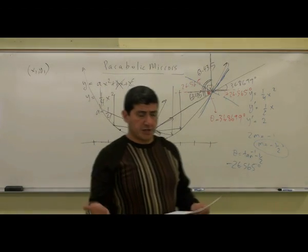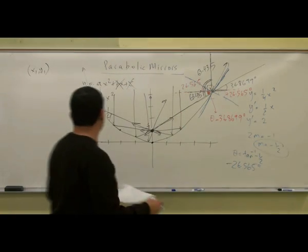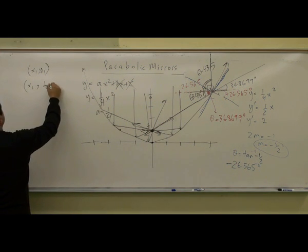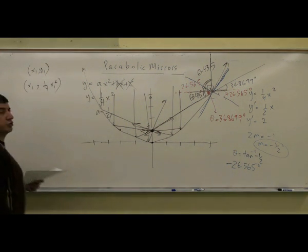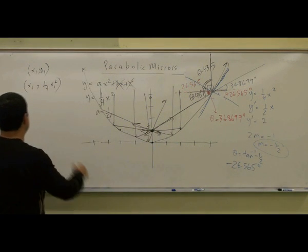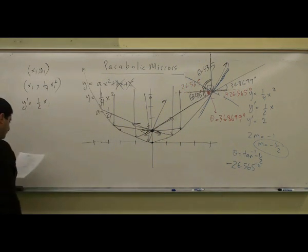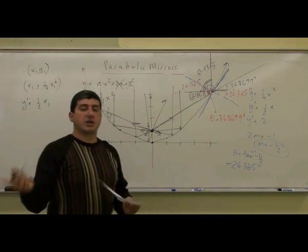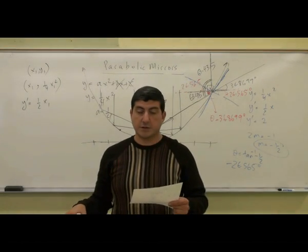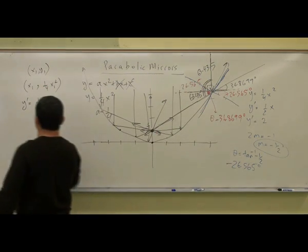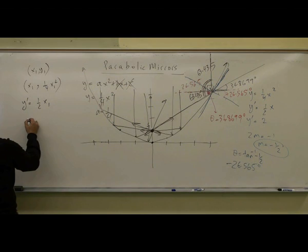We know that y1 equals quarter x1 squared. Then we took the derivative of that: y prime equals half x1. Then we took the perpendicular line to that, right? This was the slope of that. We took the perpendicular, so it was going to be—this is the slope.